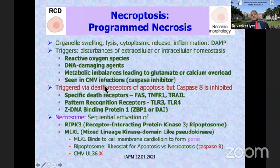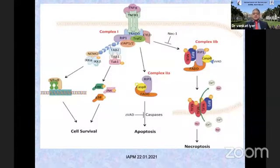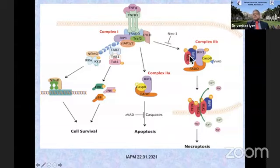Some infections like CMV can actually have caspase-8 inhibited to escape from the cells being lysed and the virus getting lysed along with it. Here is an illustration of the same: this is apoptosis when caspase-8 is activated. If this is not possible, this is the alternative pathway where MLKL assembles to form necroptosis and the ripoptosome.